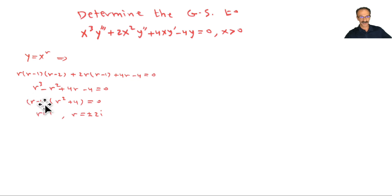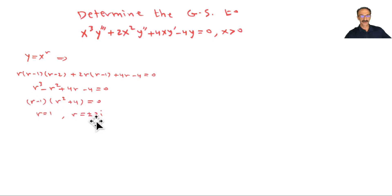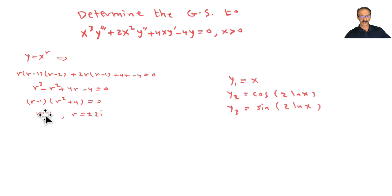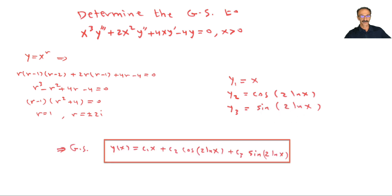Since r = 1 works, (r - 1) is a factor. Dividing by (r - 1) via synthetic or long division yields a quadratic giving complex roots r = ±2i. So y₁ = x^1 = x, y₂ = cos(2·ln x), and y₃ = sin(2·ln x). The general solution is c₁x + c₂cos(2·ln x) + c₃sin(2·ln x).